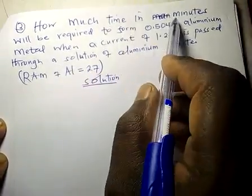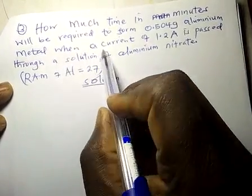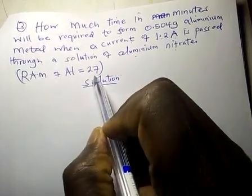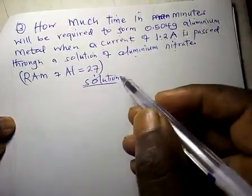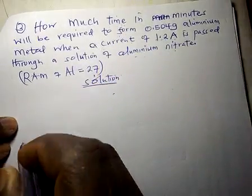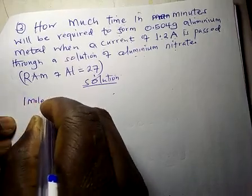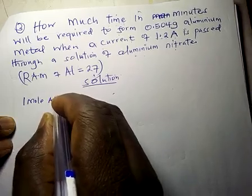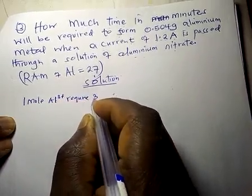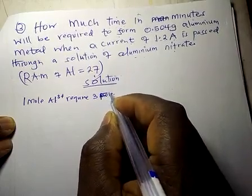How much time in minutes will be required to form 0.504 grams of aluminium metal when a current of 1.2 amperes is passing through a solution of aluminium nitrate? RAM is 27. We are given the mass and are looking for time. First, we note that 1 mole of Al³⁺ ions requires 3 moles of electrons, or 3 Faradays.